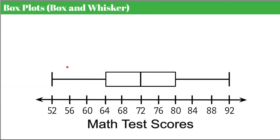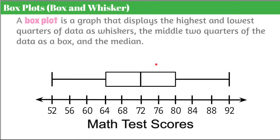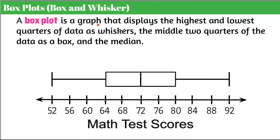Let's begin by reviewing a box plot, also known as a box and whisker plot. Here we have a box plot with a number line showing math test scores, our box, and our whiskers. By definition, a box plot is a graph that displays the highest and lowest quarters of data as whiskers and the middle two quarters of the data as a box and the median.